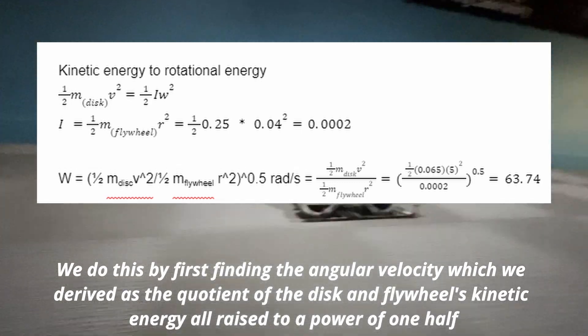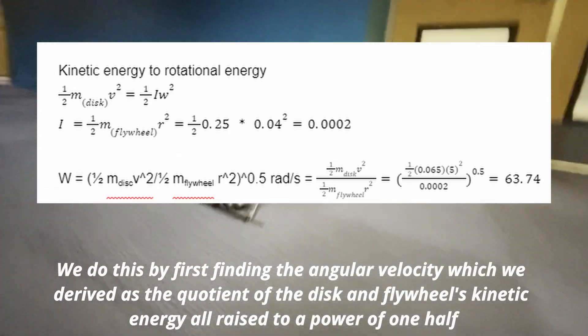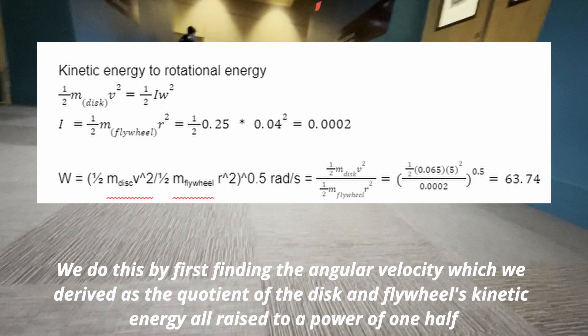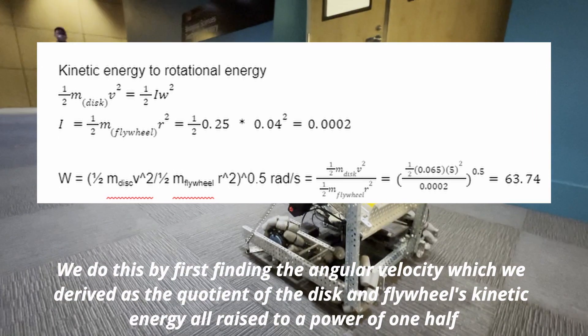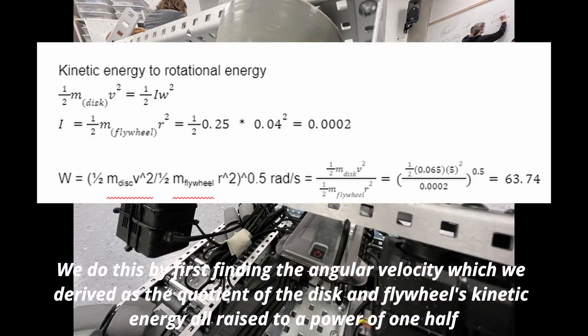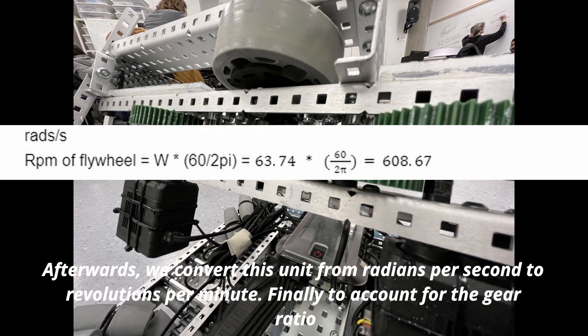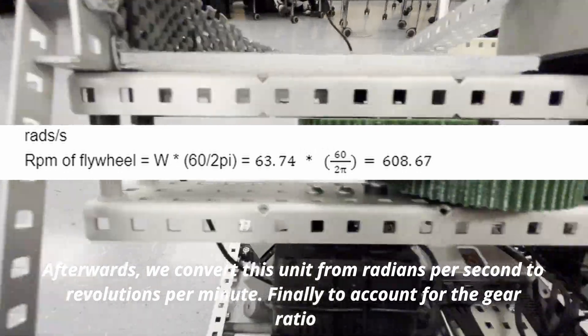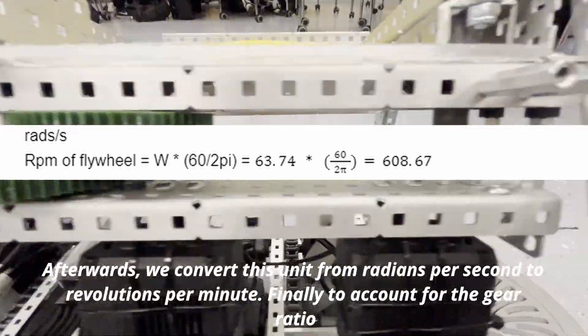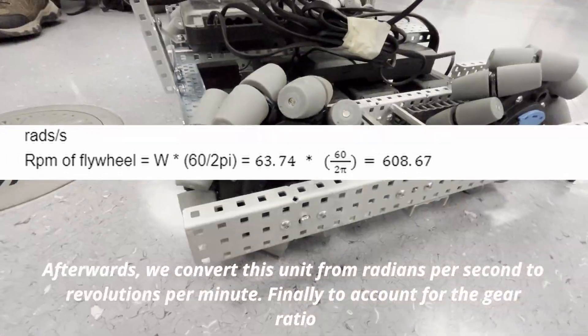We do this by first finding the angular velocity which we derived as the quotient of the disc and flywheel's kinetic energy all raised to a power of one-half. Afterwards, we convert this unit from radians per second to revolutions per minute.